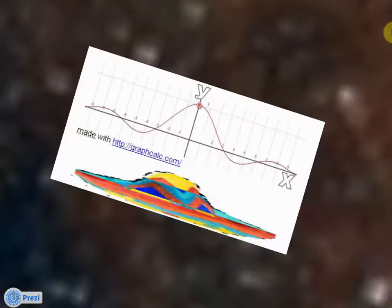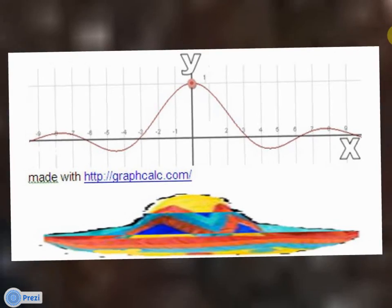Fathom the truth about the sombrero graph. Can you handle a spiky graph?